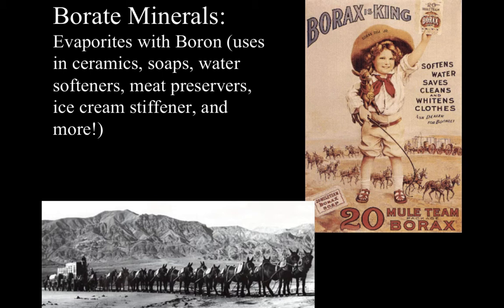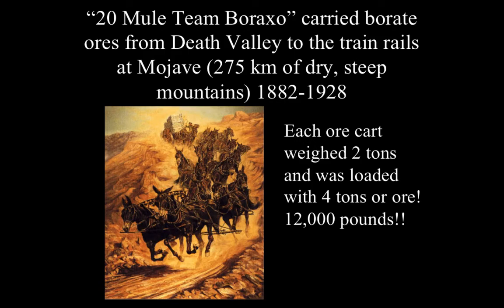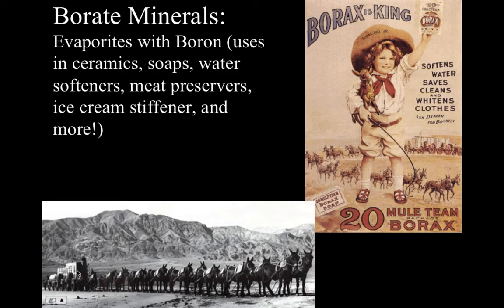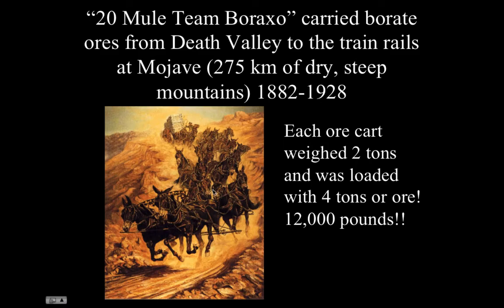The first discoveries were made around 1882 in Death Valley. The Pacific Coast Borax Company started operations there in 1882, mining the borate minerals on the Death Valley playa. The only problem was that they had to transport those minerals over 275 kilometers to the nearest railroad station, which was in the town of Mojave. They carried these ore deposits using 20 mule teams — two ore carts with a water cart in the back, each ore cart pulled by 20 mules, going over steep trails and mountain ranges.